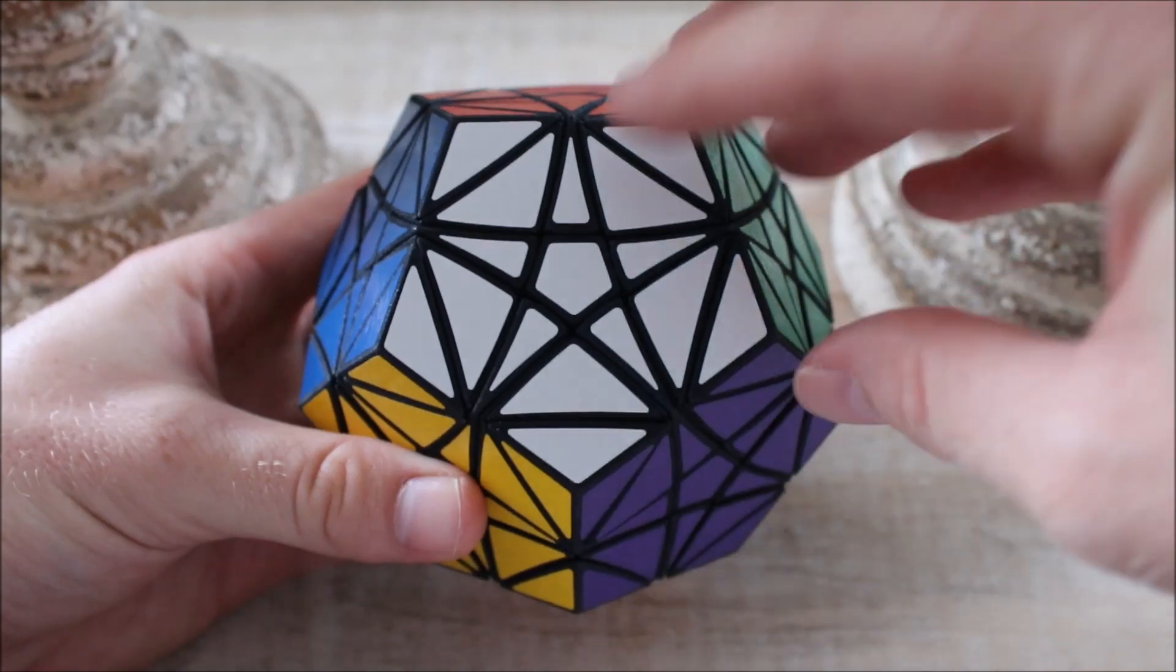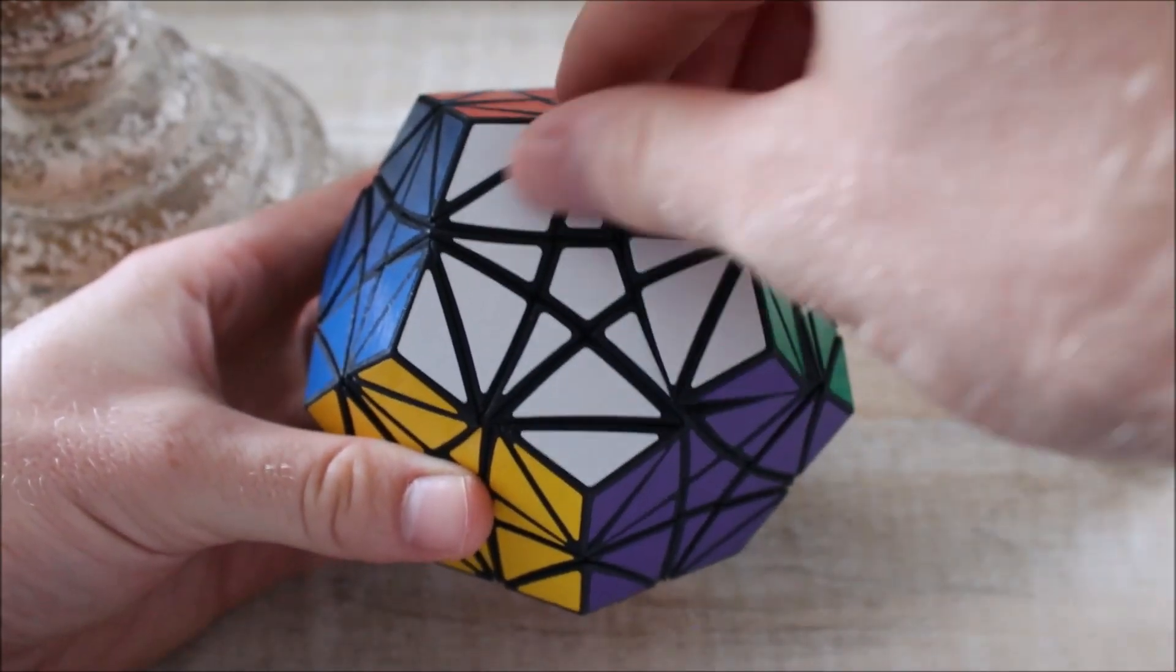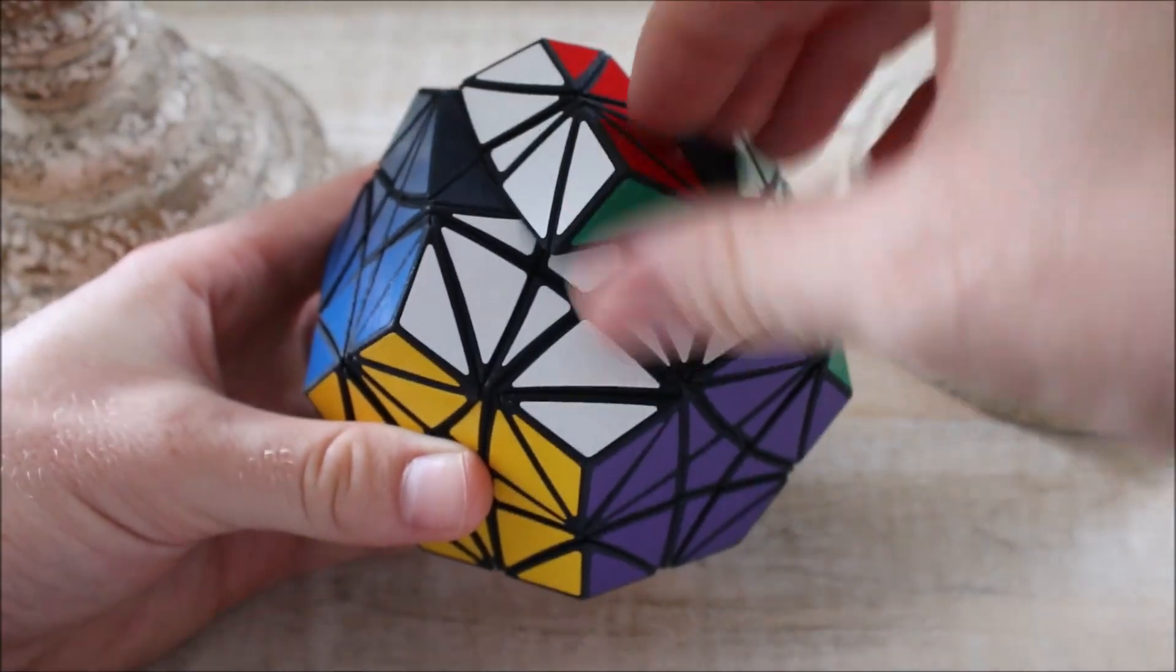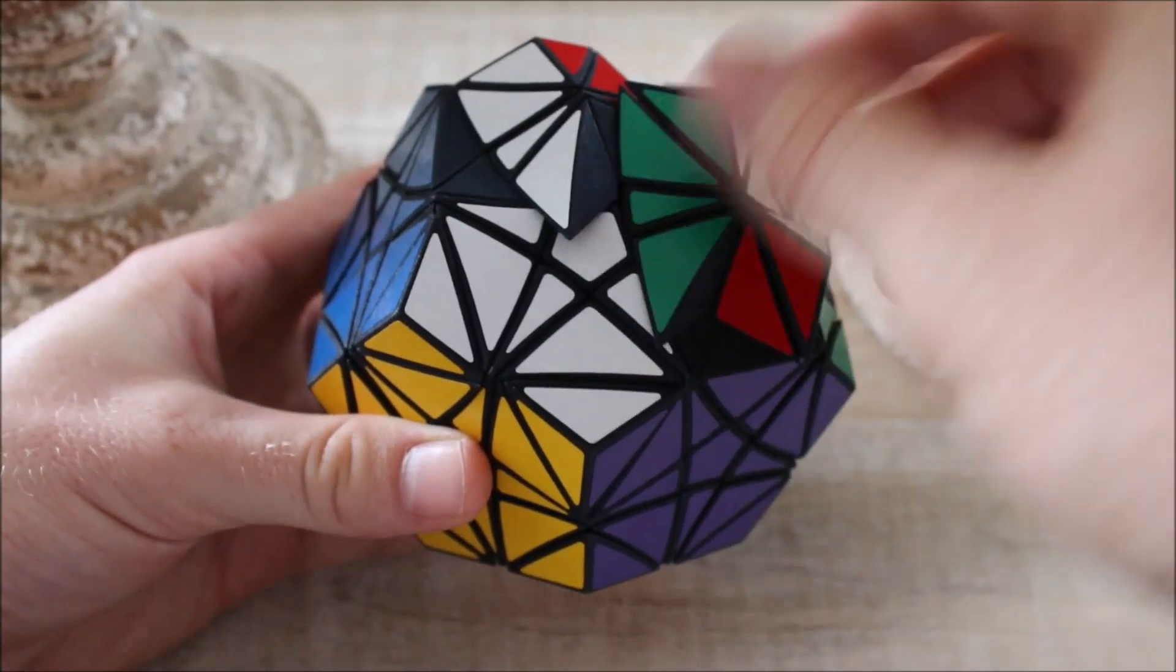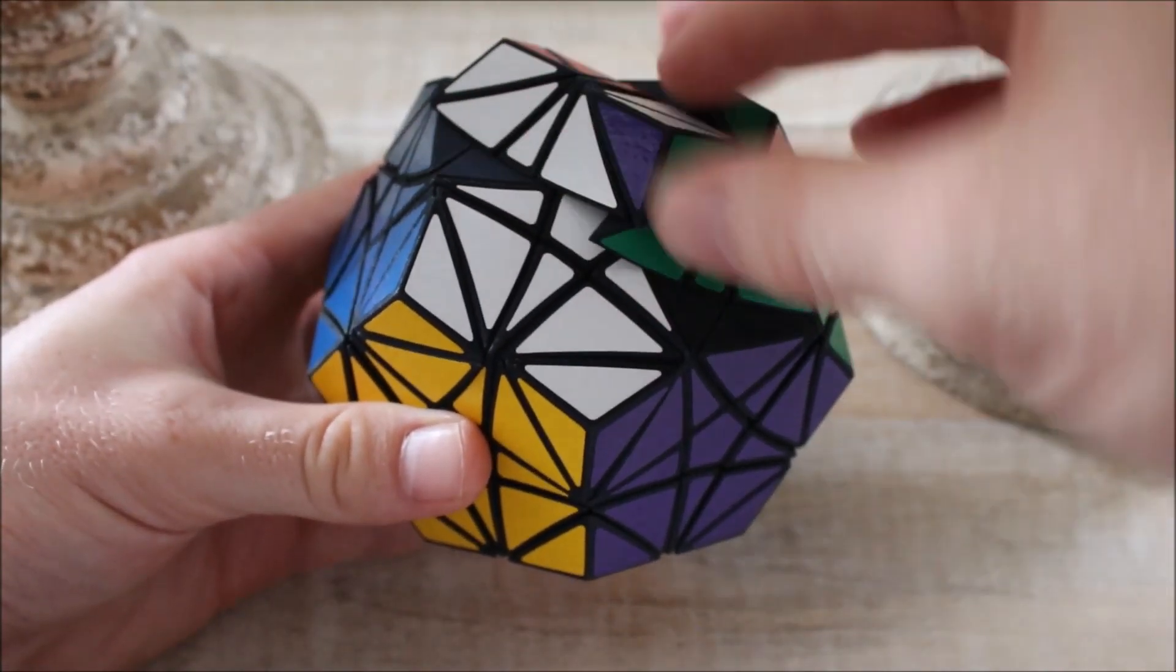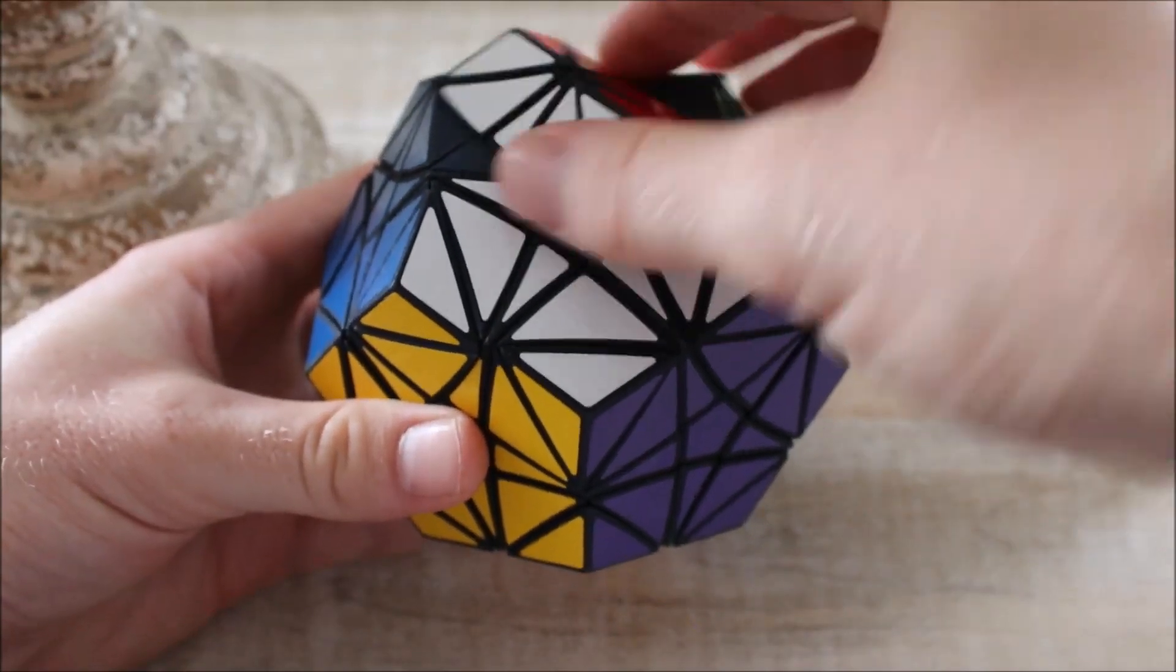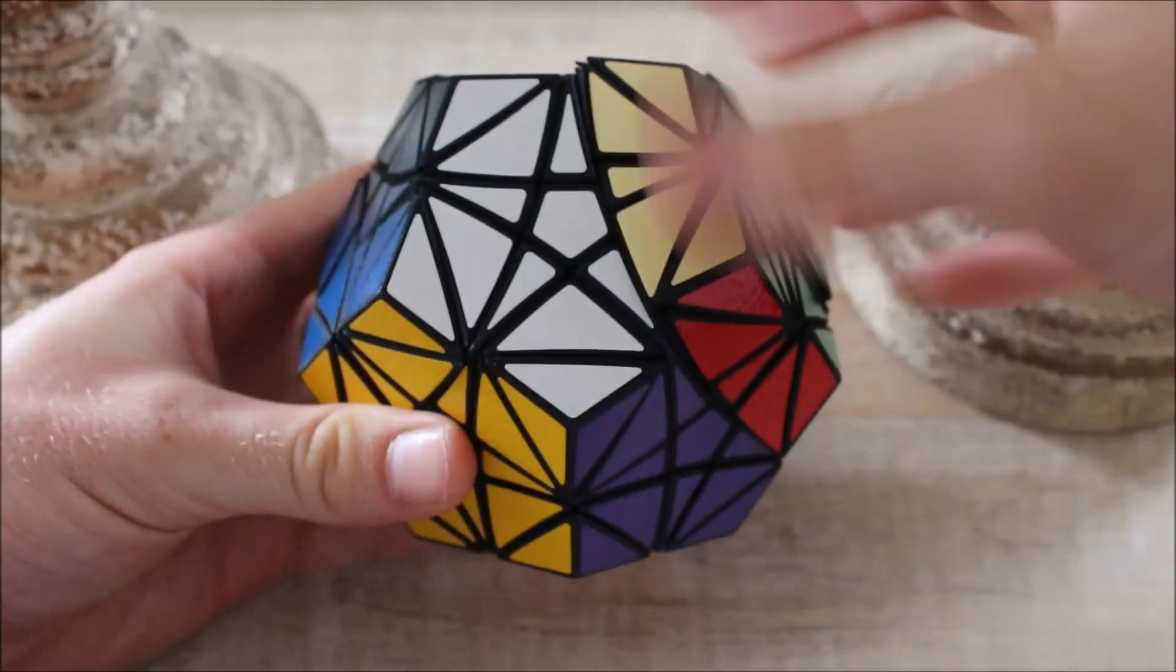The Megacopter can turn just like the Helicopter Dodecahedron, including doing jumbling moves, but it can also turn like a Megaminx.